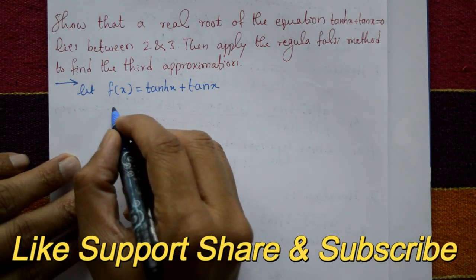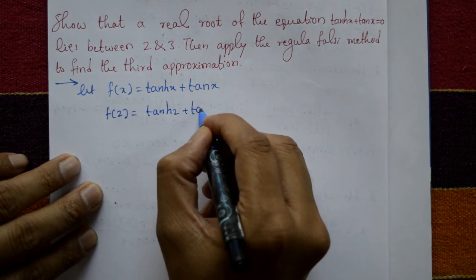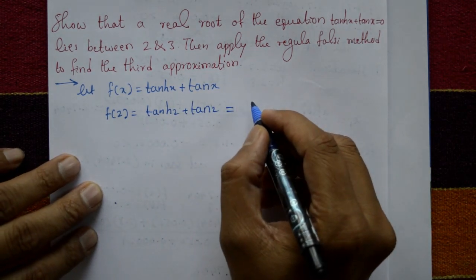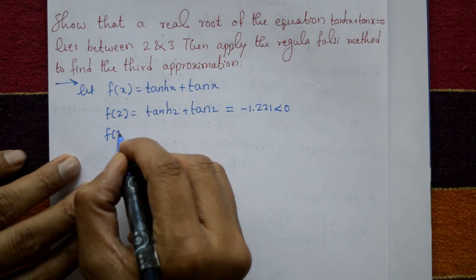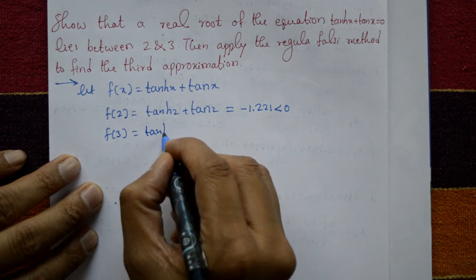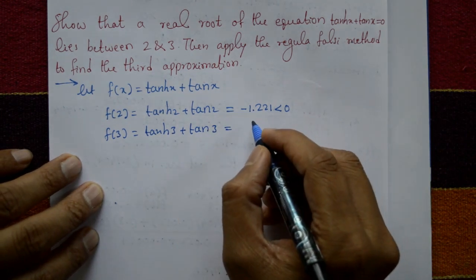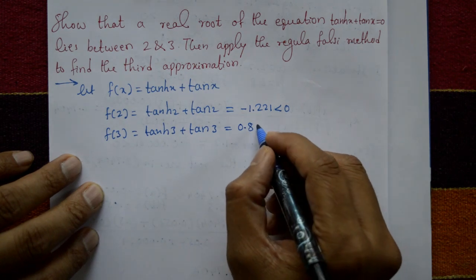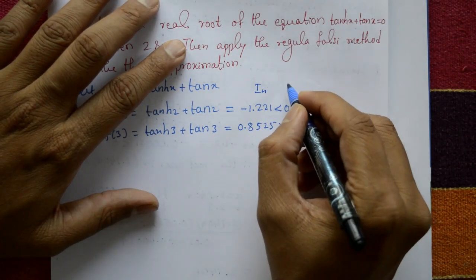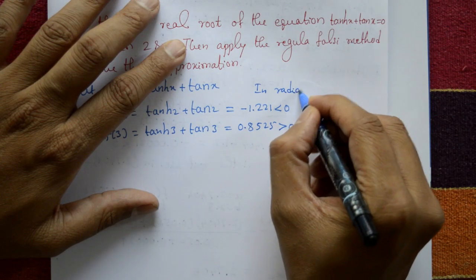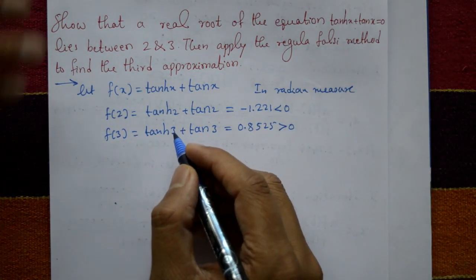Find f(a) and f(b). f(2) = tanh(2) + tan(2) = -1.221, which is less than 0. And f(3) = tanh(3) + tan(3) = 0.8525, which is greater than 0. Calculate using radian measure — select radian measure, not degree measure.